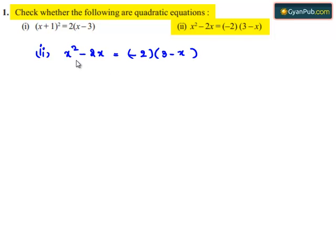On the left hand side, we have x² minus 2x. And on the right hand side, we have minus 2 times 3 minus x. So minus 2 times 3 is minus 6, and minus 2 times minus x is plus 2x.